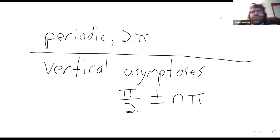These are the same vertical asymptotes that the tangent has because the tangent also has its vertical asymptotes when the cosine is zero.